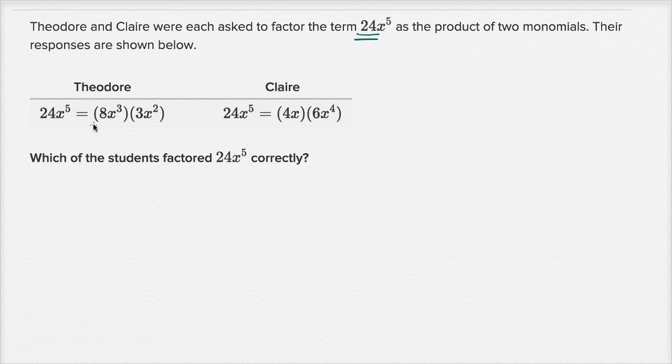Alright, now let's first look at Theodore. So he factored it into these two monomials 8x to the third and 3x squared. Well let's just see if we were to multiply these two things do we get 24x to the fifth?